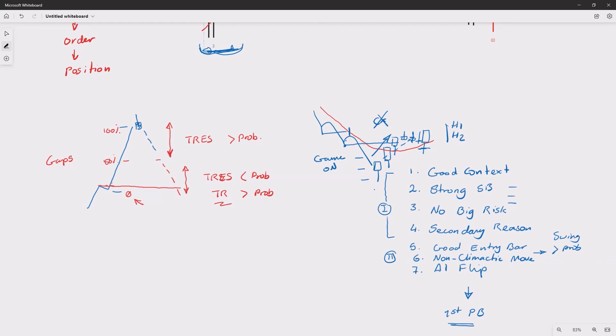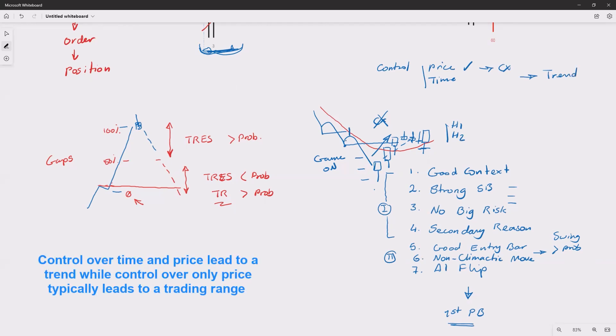You want a non-climactic move. So you see these things—you see control over price and over time, but not just price only. Because if it is a climax, this only leads to a climax. But if it is both control over price and over time, then this leads to a trend. This one leads to trading range, usually, if it is climactic. So this process is important in this six or seven steps.